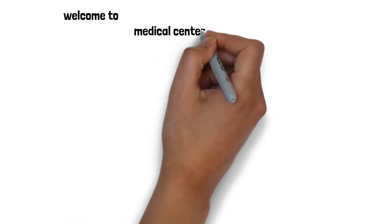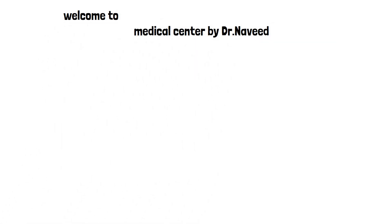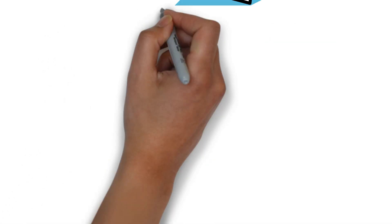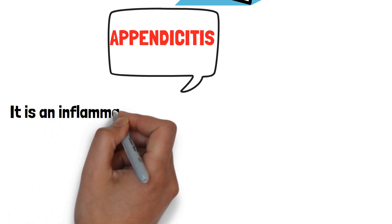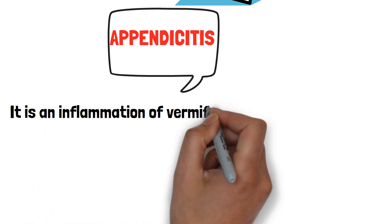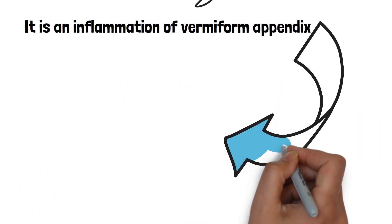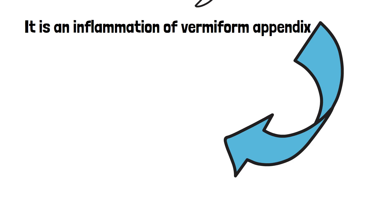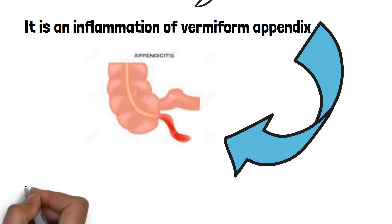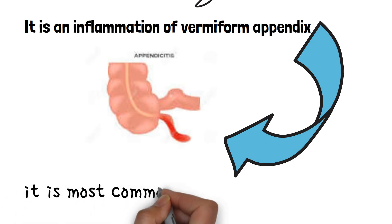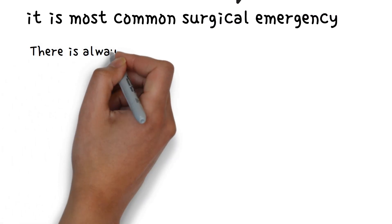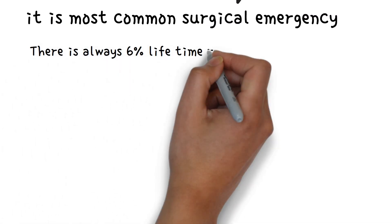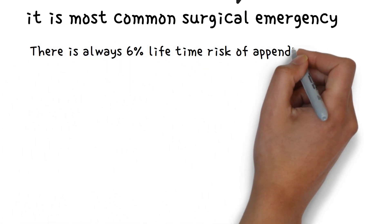Welcome to Medical Center by Dr. Naveed. Today we will study appendicitis. It is an inflammation of the vermiform appendix, which is a finger-like projection attached with the cecum, and it is the most common surgical emergency. There is always a 6% lifetime risk of appendicitis.